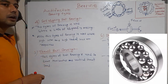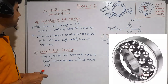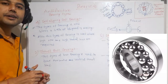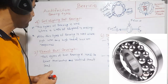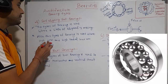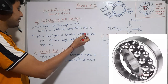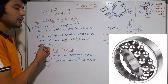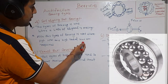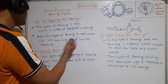The self-aligning ball bearing is used where a little misalignment is present. This type of bearing is also used where high RPM and high radial load are required.